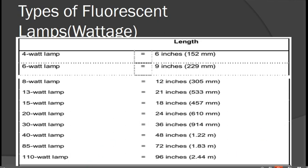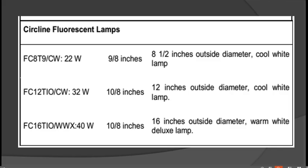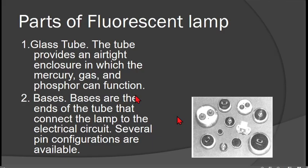These are the types of fluorescent lamp according to wattage, showing wattage and the length of the lamp. There is also the circular fluorescent lamp. Then we have the parts of the fluorescent lamp, starting with the glass tube, which is where the gases are stored and heated by electrical current to create light.